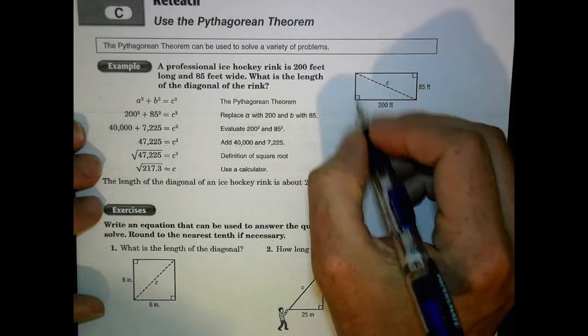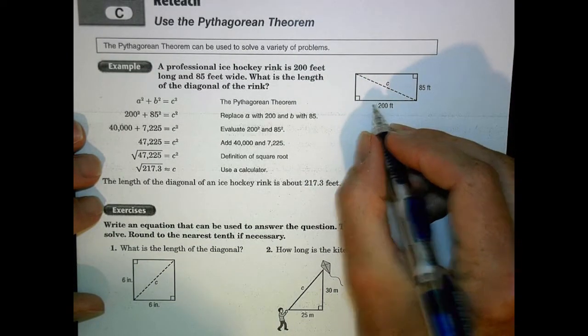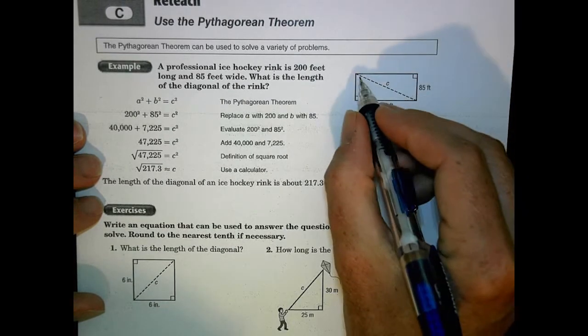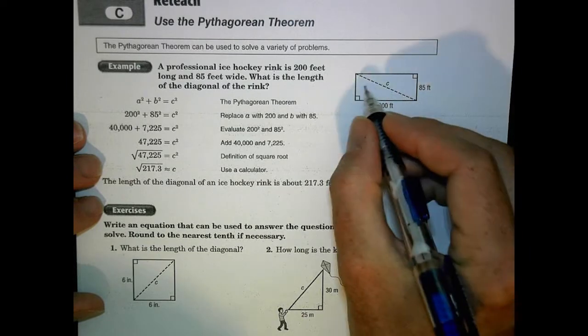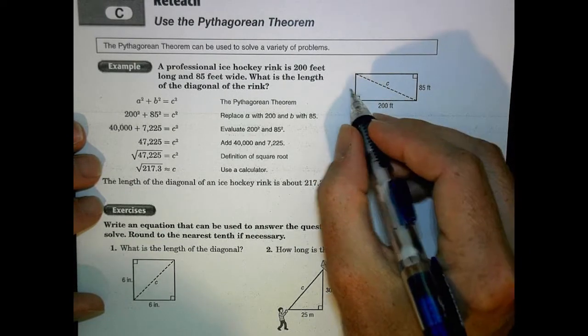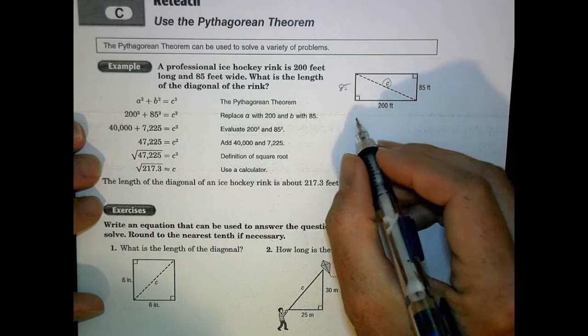So for example, if I had a professional ice hockey rink here with a 200 feet long length and 85 feet wide width there, I could find out the length of the diagonal by recognizing that I have a 90 degree angle right here and so that I have two sides or two legs of the triangle, 85, 200, and a c value there.